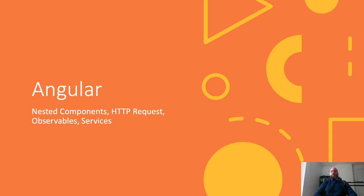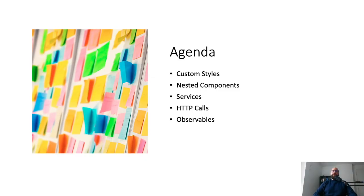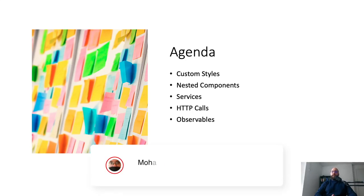You can find the link for the first part in the upper right hand corner and in the description below. Today we're going to be covering: custom styles within our components, custom components and how to integrate them with our main components, services and how they work, HTTP calls to our APIs, and through that we'll be discussing observables. As always, you will find the source code in the description below. Please like, share, and subscribe if you like the video.